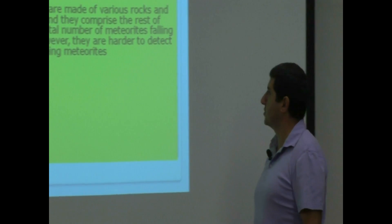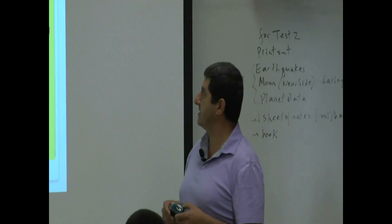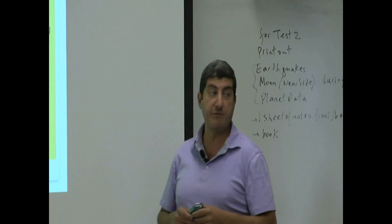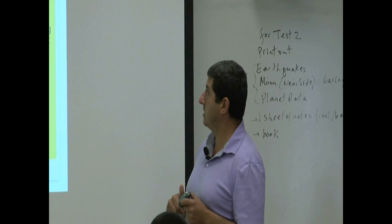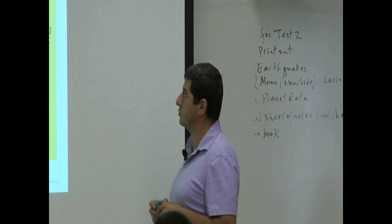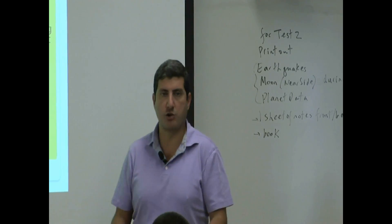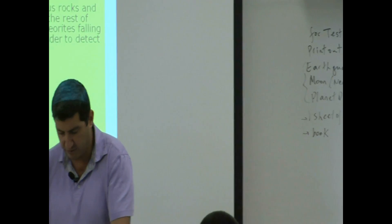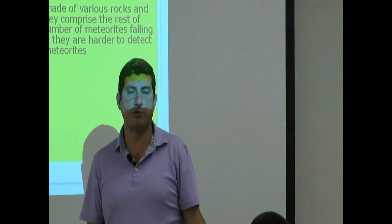Stony meteorites are made up of various rocks and silicate material, and they comprise the rest of the 94% of the total number of meteorites falling to the earth. However, they are harder to detect. So if you're walking and you find a big piece of rock, it's going to be harder for you to know.